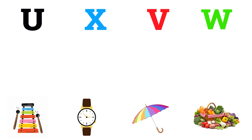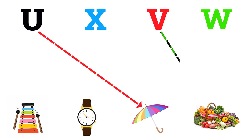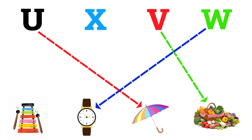U for umbrella, V for vegetable, W for wash, X for xylophone.